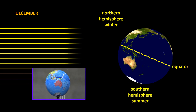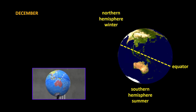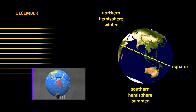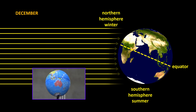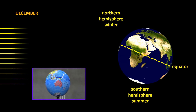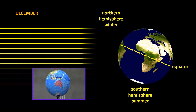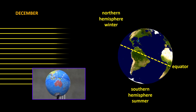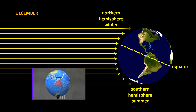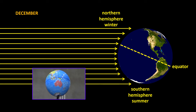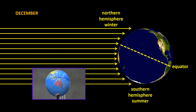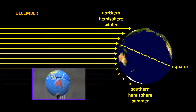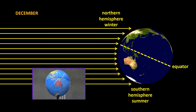Another way of looking at it is to consider lots of sunlight hitting the Earth in this position. Most of the sunlight is hitting the Southern Hemisphere, so the Southern Hemisphere is obviously going to be warmer than the Northern Hemisphere at this time of year.